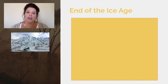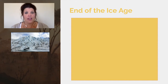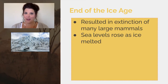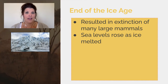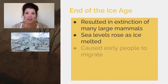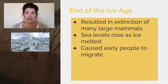After the Paleolithic era it was the end of the Ice Age. The end of the Ice Age is important not just because all of the ice melts, but because when it melts it causes sea levels to rise. It also resulted in the extinction of a lot of really large prey like woolly mammoths and mastodons, and ultimately this caused early people to migrate or move around even more.